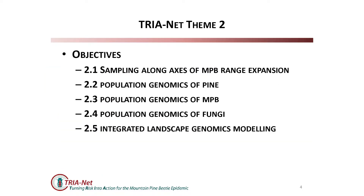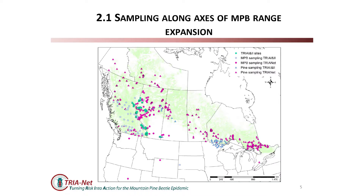In our theme there were five objectives and I'm going to talk about each of these - a bit of a skim across each in the next 10 minutes or so. We had an objective to improve our sampling, because that's important for some of the questions we're trying to answer; population genomics of the three partners - pine, MPB, and fungi; and then integrating across all three. It's a really lofty goal because it's hard to understand one genome, let alone put three together and look at all possible interactions - an exponentially more complex problem.